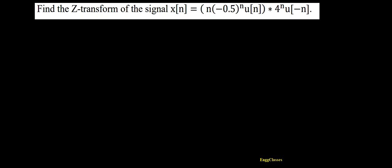Welcome to NG Classes YouTube channel. In this video lecture we'll consider finding the Z-transform of the given signal x(n), where x(n) is equal to n·(-0.5)^n·u(n) convolved with 4^n·u(-n). The convolution of two signals in the time domain is equivalent to multiplication in the Z domain, and we'll use that concept to find the Z-transform of x(n).